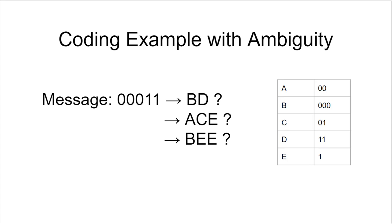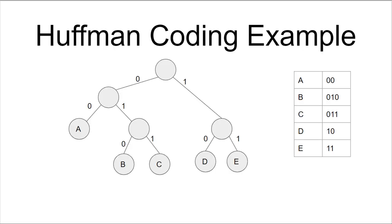Let's look at an example of a Huffman code instead. Here we have the same five letters, but now you notice that none of the codes are a prefix of the others.